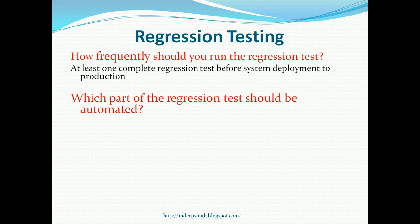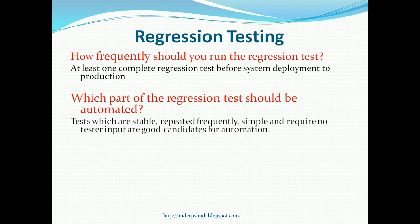Which part of the regression test should be automated? Regression tests are good automation candidates. Tests which are stable, repeated frequently, and simple — requiring no manual tester input — are good candidates for test automation. That is how you can reduce the overall effort in the regression test.